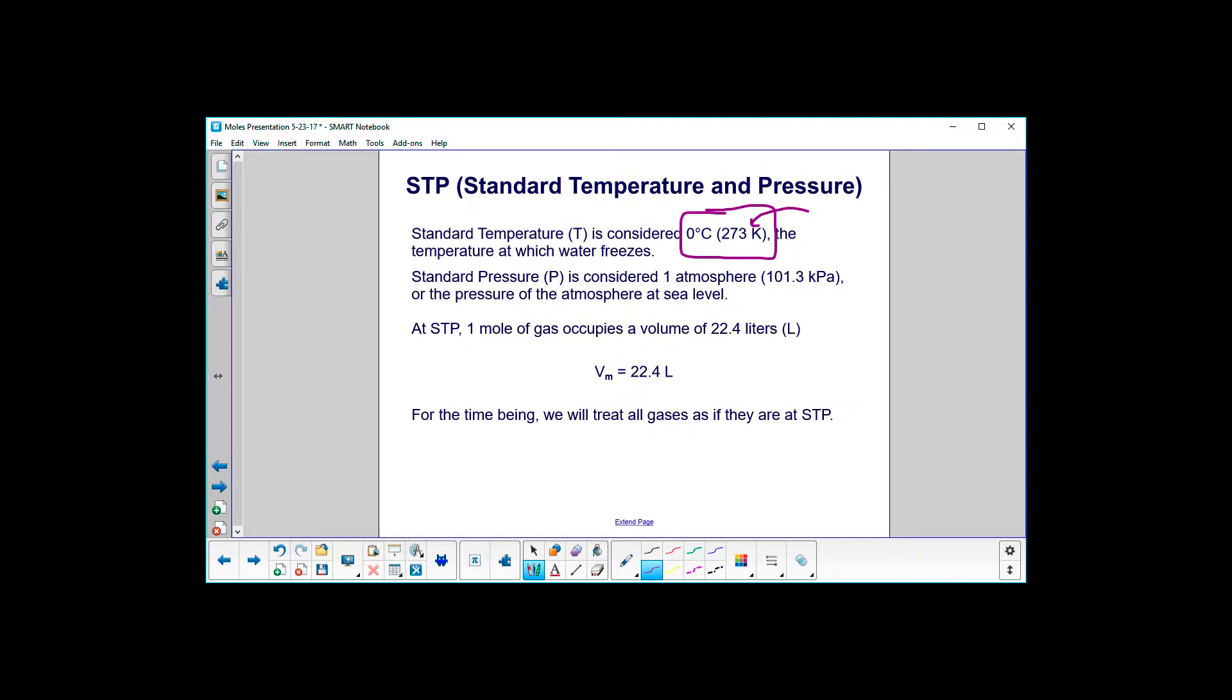Standard pressure is considered to be one atmosphere or, in other units, 101.3 kilopascals or the pressure of the atmosphere at sea level, which is probably where most people live. Water freezing and where most people live.